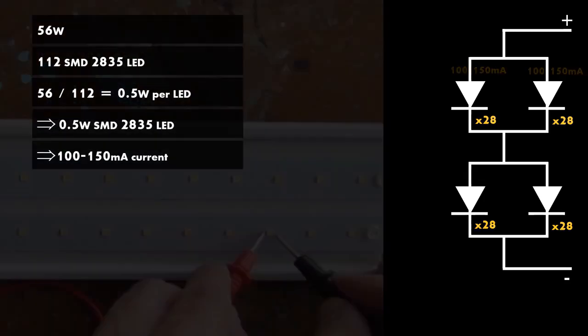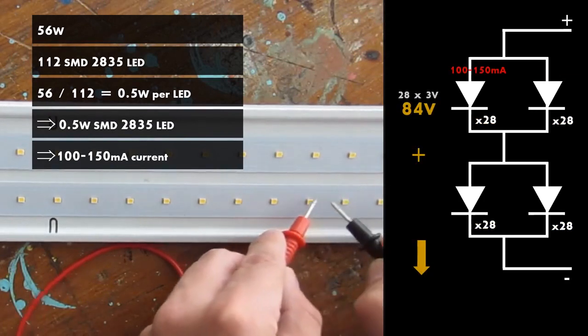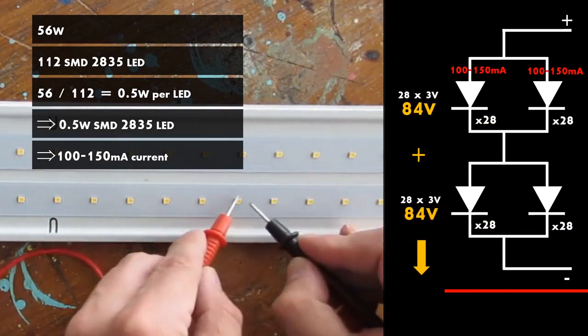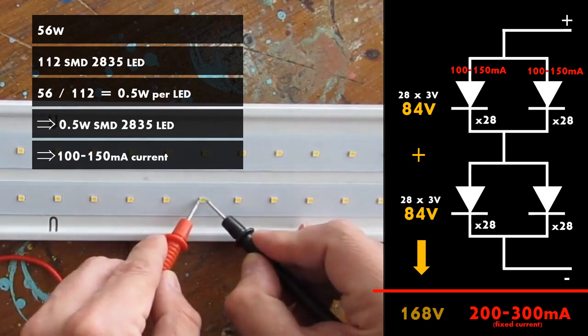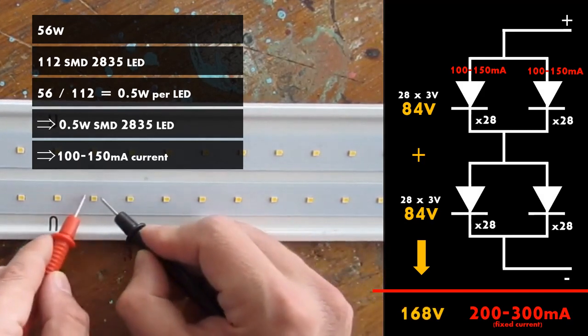Counting 3 volts and 150 milliampere per LED, we should be able to drive the lamp with a 300 milliampere 168 volts power supply that I do not have.